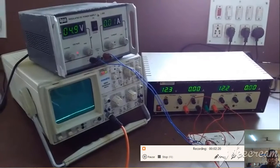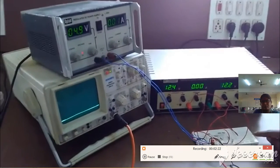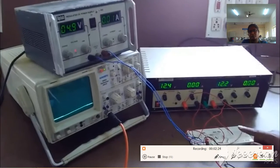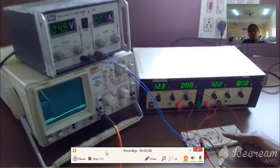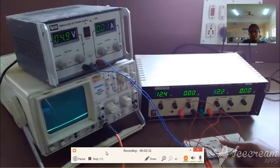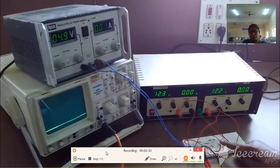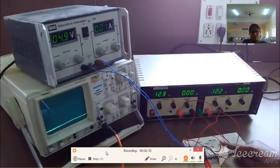R-2R ladder circuit means we are going to use only two resistances: one is R, the other one is 2R. So here I am going to use 2R, which will be connected to switches.